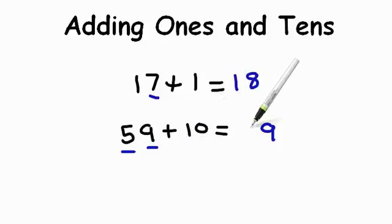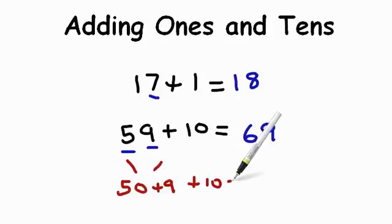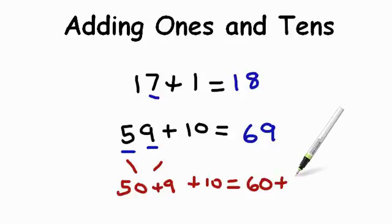Another way you can think about it is 50, because the 5 tens is actually 50. If we break these apart, we have 50 and 9 plus 10. We can add 50 plus 10 to get 60, plus 9, and that equals 69.